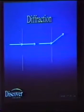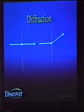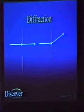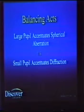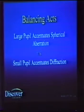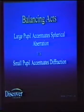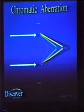Diffraction is pupillary limited. If it's a large pupil, there's going to be very little diffraction of light. As the pupil gets smaller, there's going to be diffraction. So there is certainly a balancing act — between a large pupil, which accentuates spherical aberration, and a small pupil, which accentuates diffraction.